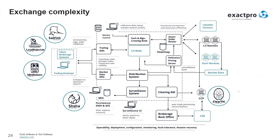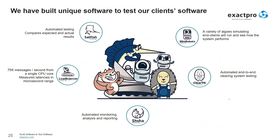These pictures illustrate the complexity of a trading platform and how our test tools could be applied for testing such platforms. There are lots of components, and our tools are connected to specific parts of the system. For example, the tool called Tailfish simulates the flow between the user and the application trading gateway — we send specific trades and validate responses. We also have a tool called Load Injector, designed for non-functional testing, which we previously covered in this presentation.